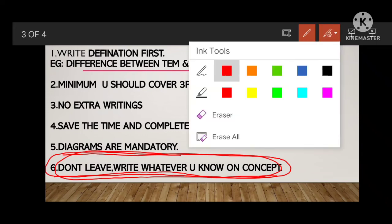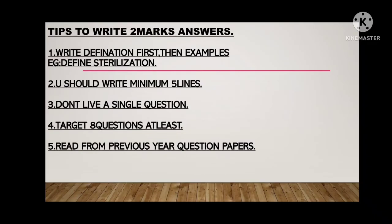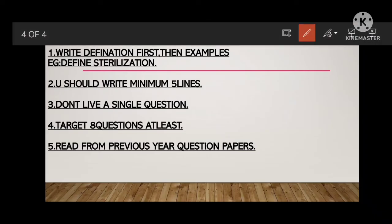Now let's move to the tips to write 2-mark answers. 2-mark questions are the distinction-defining concept in your answer sheet — if you want to score distinction or first class, it will be decided by your 2-mark performance. In this also, definition is first. Then give examples. For example, if they ask 'Define sterilization,' write what sterilization is and give 2 to 3 types: filtration sterilization, radiation sterilization, thermal sterilization.